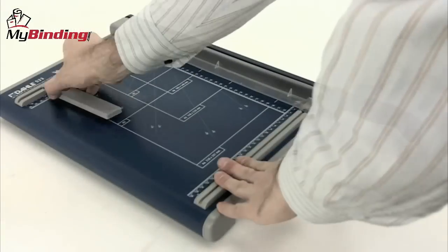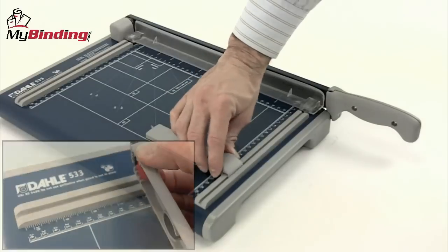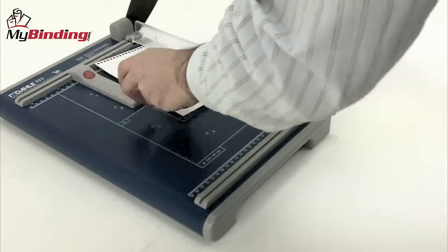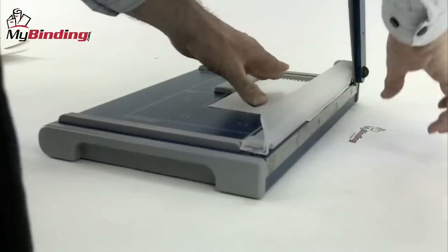Sharp in both look and function as Dahle always is, the 533 is no exception. With a removable magnetic fence, lining up is easy to do. Place it in and make your cut. Protective guard keeps your fingers safe at all times.